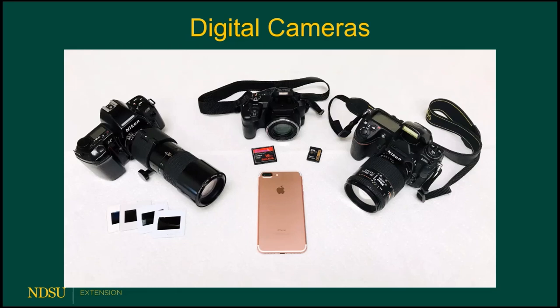That little point-and-shoot camera at the top has about a six-megapixel sensor. The camera on the right is my main photography camera — it's a Nikon D300s digital SLR, and it functions almost exactly the same as the film camera on the left, except images are captured and stored digitally. I can put a number of different lenses on it: macro lenses for close-up, telephoto, zoom, and wide-angle lenses. It's a really, really good camera with about a 14-megapixel sensor.